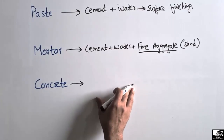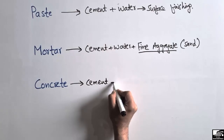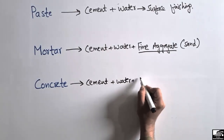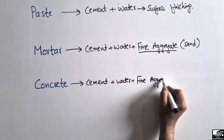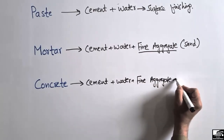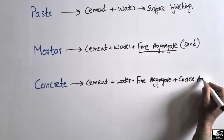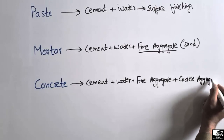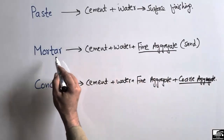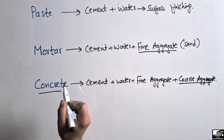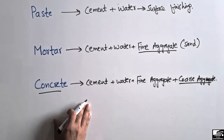Now, what is concrete? Concrete is the most commonly used structural material for the purpose of construction. Concrete is made of cement, water, fine aggregate, and coarse aggregate. We add coarse aggregate to that of mortar in order to get concrete. So the addition of coarse aggregate to mortar gives us concrete.